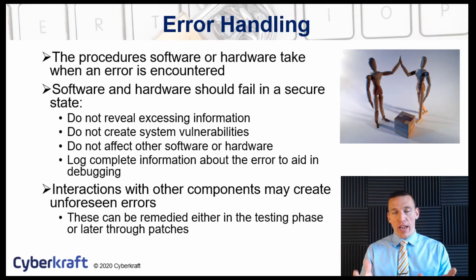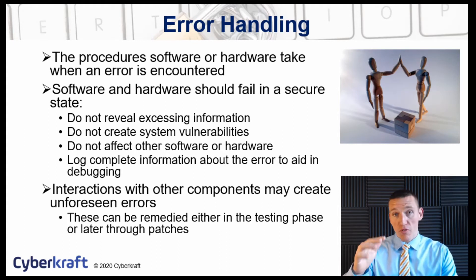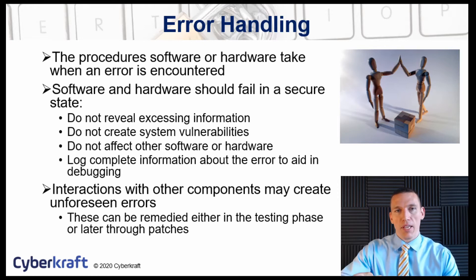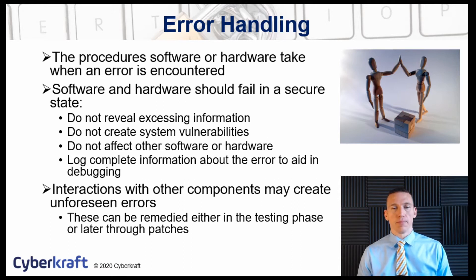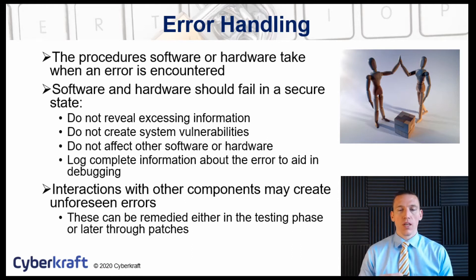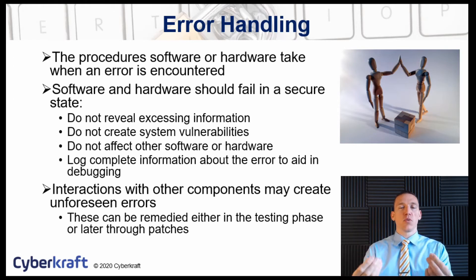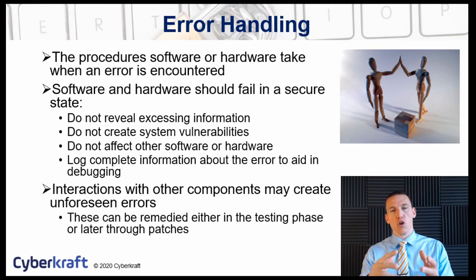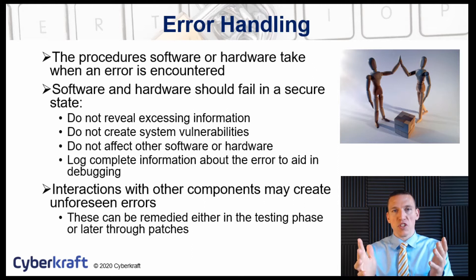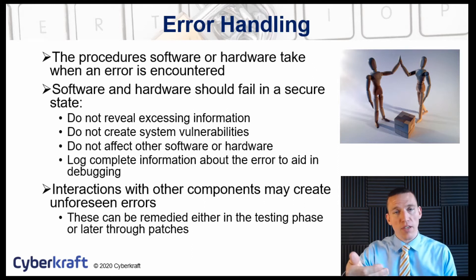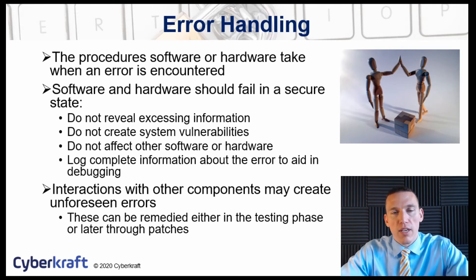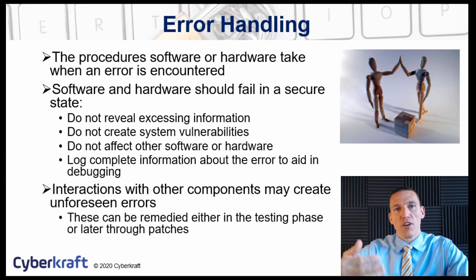When your system encounters an error, you want that error to perform in a certain manner. You don't want the error to completely destroy your data. You want your data and the application or operating system to behave in a certain manner — that's known as error handling. Software and hardware should fail in what's known as a secure state, meaning when an error occurs, the error doesn't reveal excessive information. The error message should simply say an error has occurred and then log the error so it can be reviewed later. The amount of information shown on the error screen should be very limited.